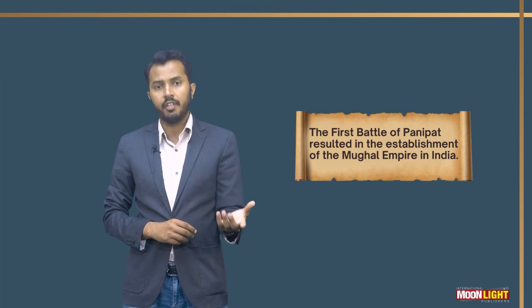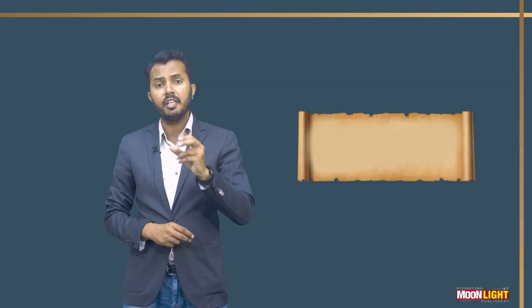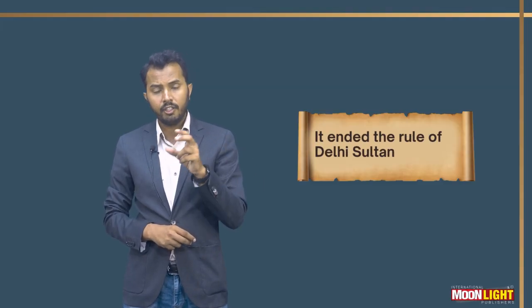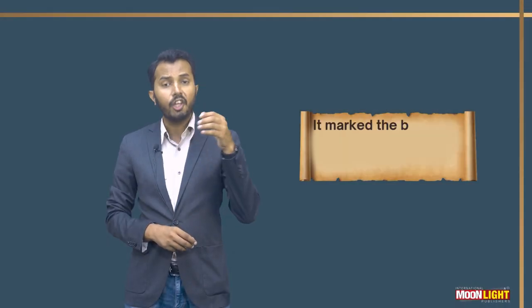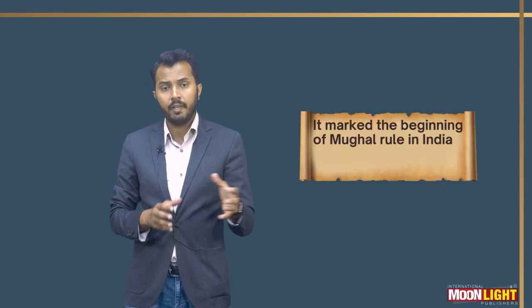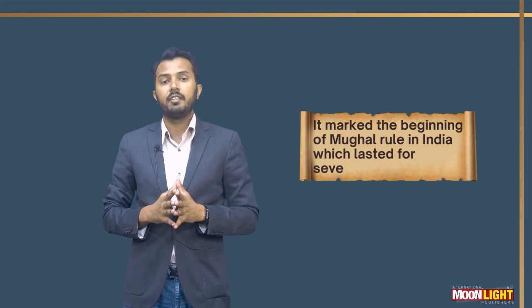One of the most significant impacts was that this battle ended the Delhi Sultanate, which was established by Qutbuddin Aibak. When we say that this dynasty came to an end with the first battle of Panipat, then we can say that this battle resulted in the establishment of the Mughal rule in India.